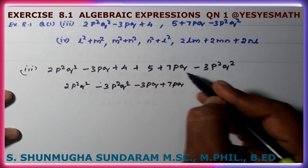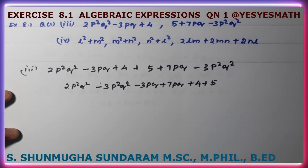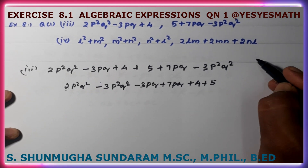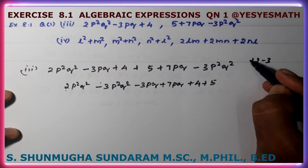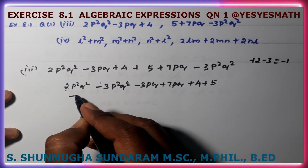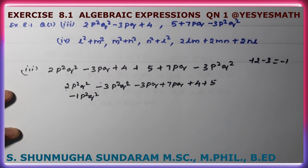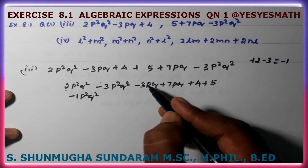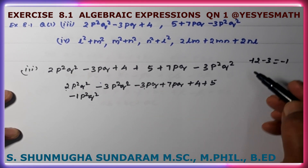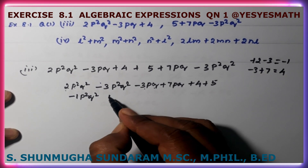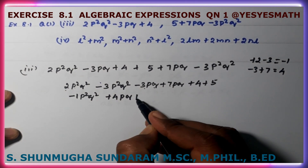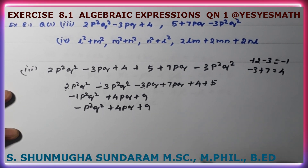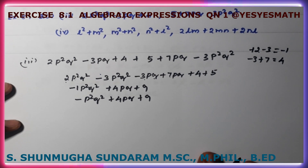The constants are plus 4 plus 5. The pq terms: plus 7pq and minus 3pq are like terms. For p²q²: 2 minus 3 gives minus 1. So minus 1 p²q². Then minus 3 plus 7 gives plus 4pq. Result: minus 2p²q² plus 7pq.